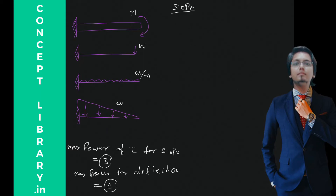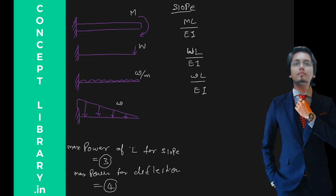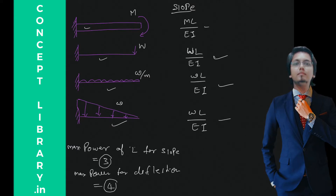First, write the base expressions: ML/EI, WL/EI (capital W), wL/EI (small w), and wL/EI. You write these as they are — for this beam, for this beam, for this beam, and for this beam.